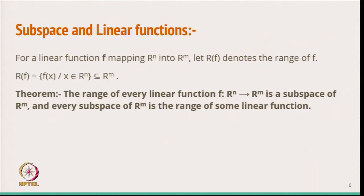From here, we define the relation between subspaces and linear functions. For a linear function f mapping from Rⁿ to Rᵐ — which corresponds to a matrix A of order m×n — let Rf denote the range of the function f. Rf is the set of all images f(x) such that x belongs to Rⁿ, and we know this will be a subset of Rᵐ.